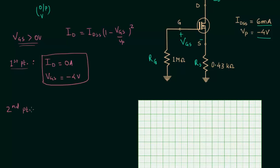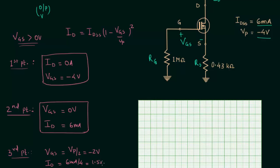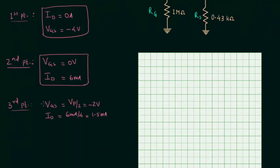For the second point, set VGS = 0 V, giving ID = IDSS = 6 mA. The second point is (0 V, 6 mA). For the third point, set VGS = VP/2 = -2 V, which gives ID = IDSS/4 = 6/4 = 1.5 mA. The third point is (-2 V, 1.5 mA).